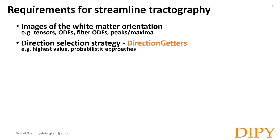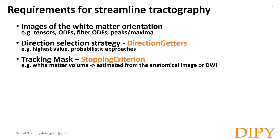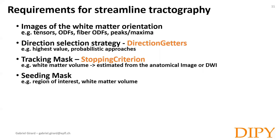Then we need a way to select a propagation direction in a voxel given the voxel-wise orientation and previous tractography orientation — for instance, selecting the orientation associated with the highest value of the ODF. We also need a tracking mask or stopping criterion to stop the propagation of the streamline, for instance when they exit the white matter volume or reach a region of interest. Moreover, we need to define where the tractography starts — the seeding mask — which can be the whole white matter volume, the white matter–gray matter interface, or a specific region of interest.